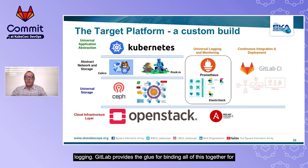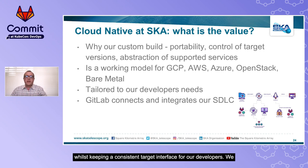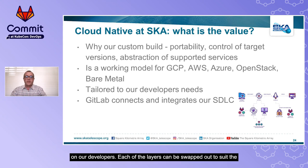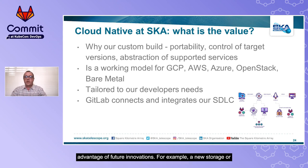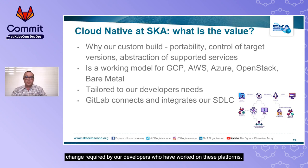Kubernetes and standard resources are our universal application abstraction layer, with Prometheus and Elastic Stack providing universal monitoring and logging, and GitLab binding all of this together for our complete software development lifecycle. Cloud-native at the SKA — why a custom build and what is the value? It enables us to shift deployment from infrastructure provider to provider whilst keeping a consistent target interface for developers. We can swap underlying resource implementations with minimal impact on developers, and each layer can be swapped out to suit the hosting provider. We have used this in anger through implementations on two independent OpenStack deployments, a bare metal cluster, and AWS EKS — all with little to no change required by our developers.